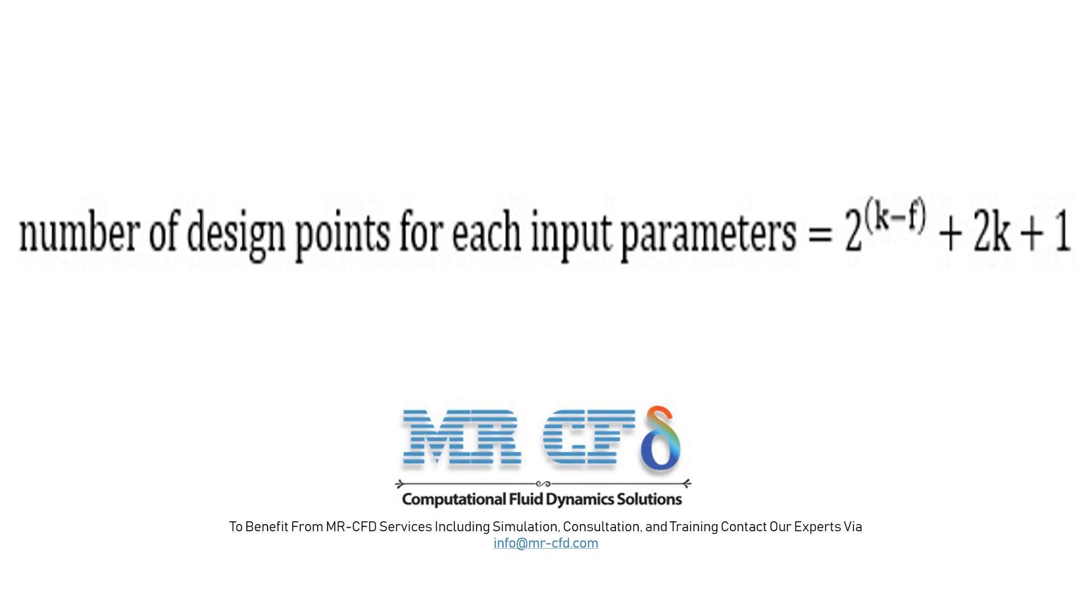According to this formula, the number one indicates the only case where all factors have their own mean value or level zero. The expression 2k indicates the state in which the maximum and minimum value of each parameter, level alpha and minus alpha, with a constant mean value for the rest of the parameters are considered.